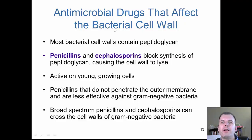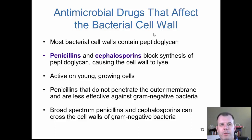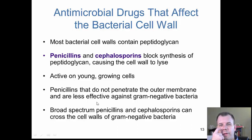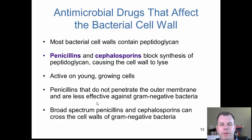The first group is drugs that affect the cell wall. Most bacteria have peptidoglycan, so penicillins and cephalosporins go and block peptidoglycan synthesis - the most important component of the cell wall. They work on active, young growing cells. The problem is that penicillins don't penetrate the outer membrane of gram-negative bacteria and are less effective against them. So penicillins are going to be more for gram-positive bacteria rather than gram-negative.